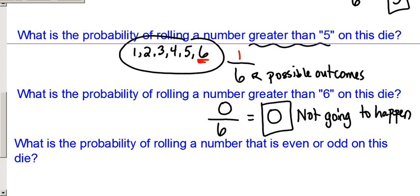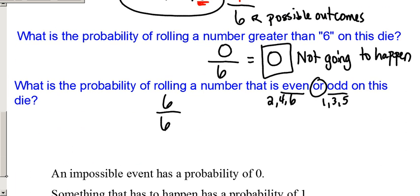This one's sort of a trick question the other way. What's the probability of rolling that die with the 1, 2, 3, 4, 5, 6, and getting a number that's even or odd? So the even numbers would be 2, 4, 6. On the die we would only have the 2, 4, 6. The odd would be 1, 3, or 5. So to get an even or an odd, well, that's everything on the die. So all 6 out of 6 options would give us an even or an odd number.